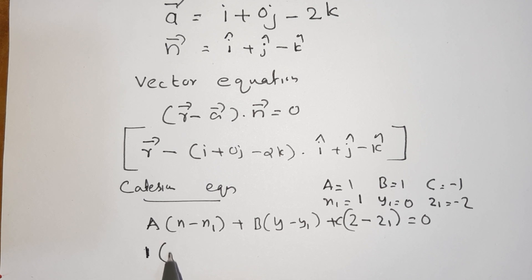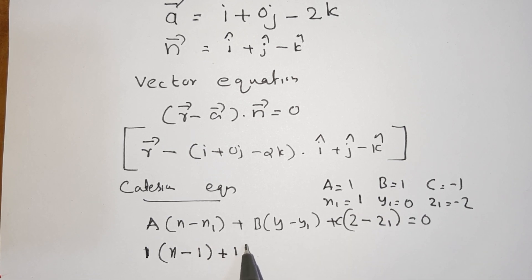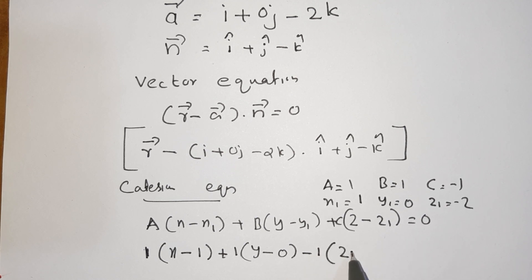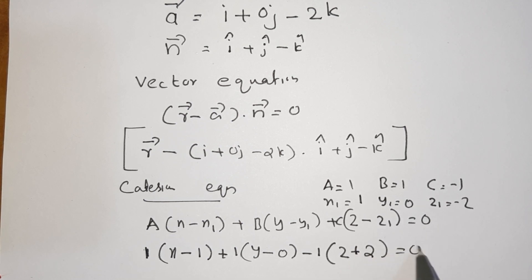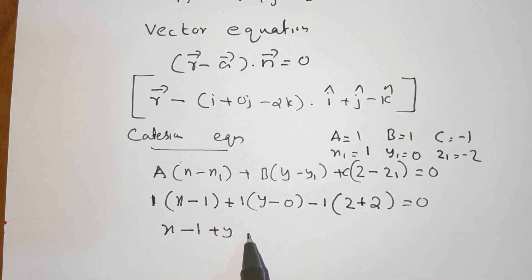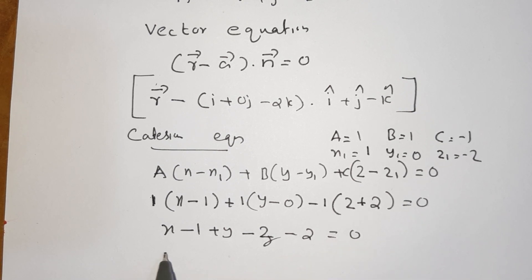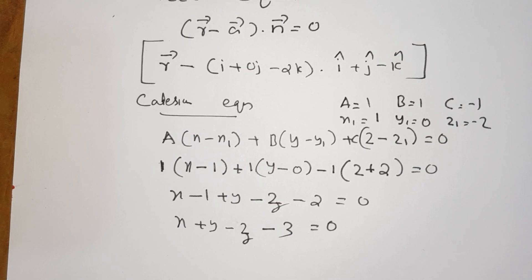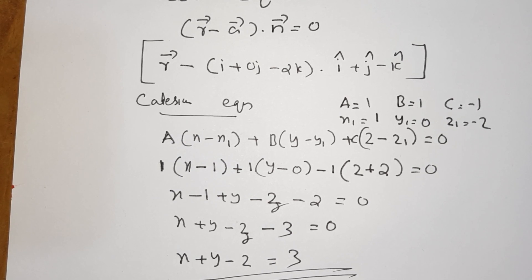Substituting: 1 into (x minus 1) plus 1 into (y minus 0) plus (-1) into (z minus (-2)) equals 0. This gives x minus 1 plus y minus z minus 2 equals 0, so x plus y minus z equals 3. This is the Cartesian equation of the plane.